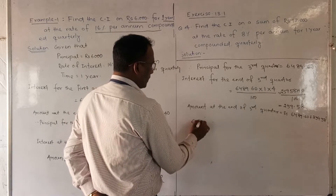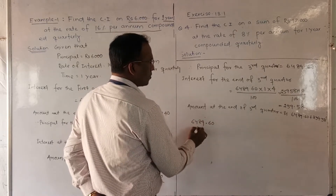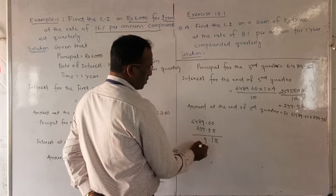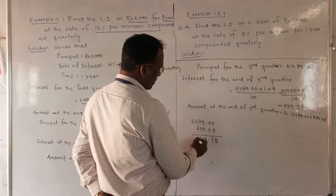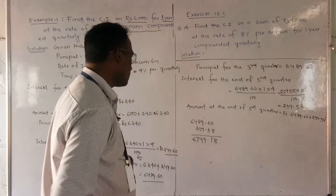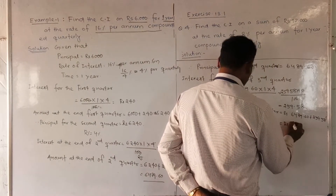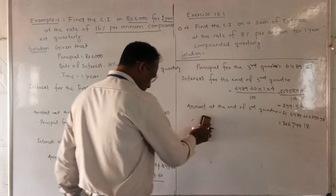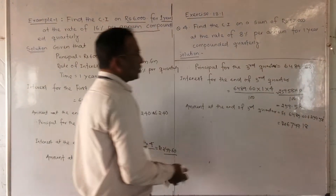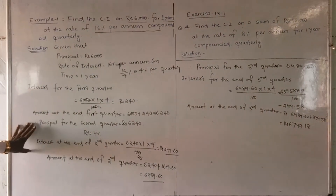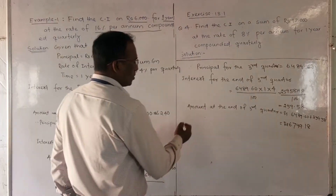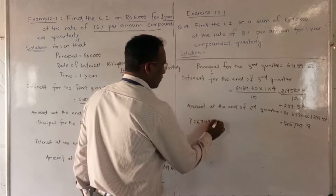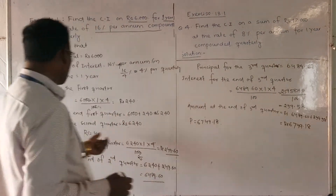Amount at the end of the third quarter = ₹6489.60 + ₹259.58 = ₹6749.18. Hence, the principal for the fourth quarter = ₹6749.18.